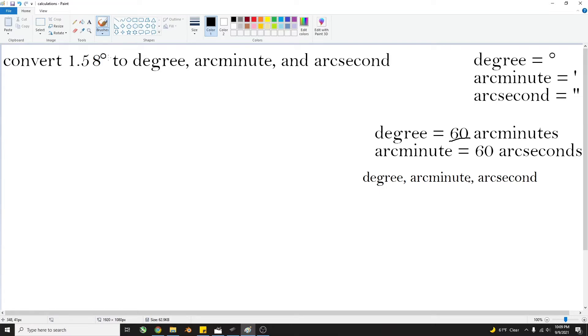So we're given 1.58 degrees, and over here I'll show you 1 degree equals 60 arc minutes. So a degree is kind of like an hour, and arc minutes are just like minutes.